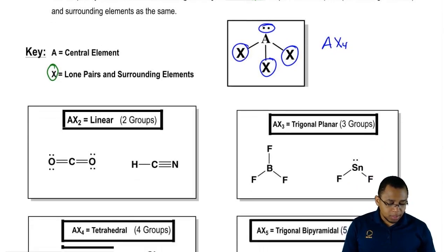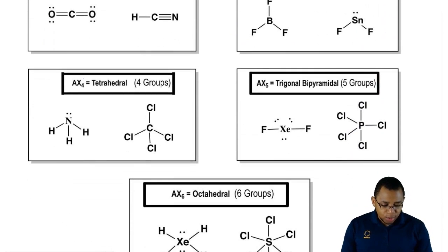AX4 would be the electronic geometry of this compound. All you'd have to do is come down here and realize if you're AX4, then your electronic geometry is tetrahedral because you're surrounded by four different groups. These different groups can be in different arrangements.